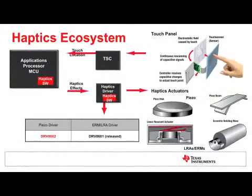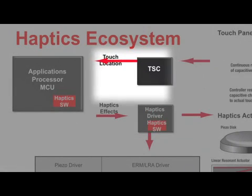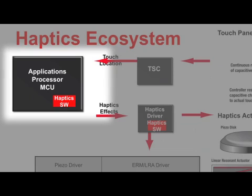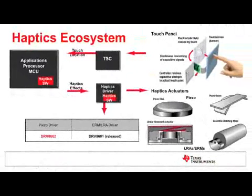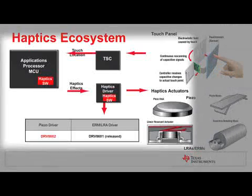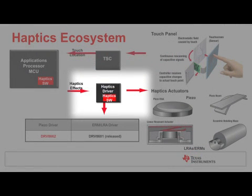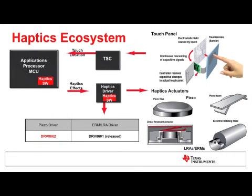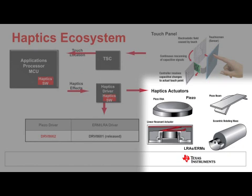So, how do you implement haptics? A typical haptics ecosystem for a touch enabled device consists of a touch screen controller and a processor like OMAP or a microcontroller like the MSP430. The touch location of the user is detected by the touch screen controller. This touch location is fed back to the processor which makes the decision of which haptics effect to be played. This haptics effect is then fed to the driver which interfaces to the actuation element that provides the desired haptics effect. The haptics software can reside either in the processor or the haptics driver. The actuation elements can either be piezo, ceramic based, or inertial motor based.